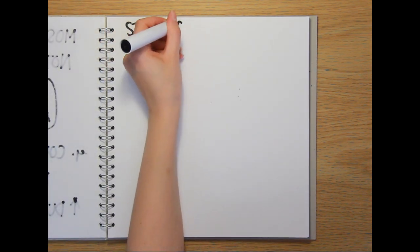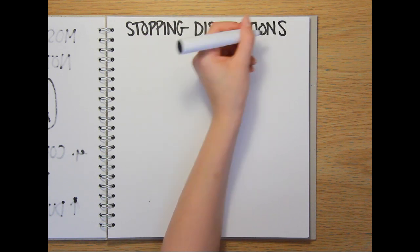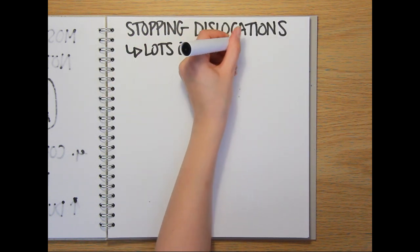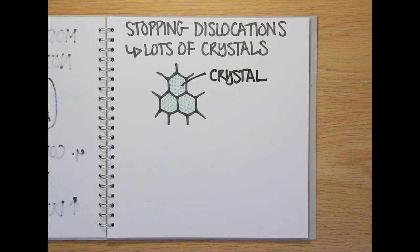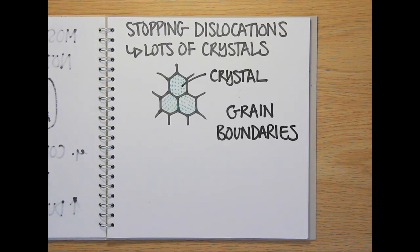Another way to stop dislocations from spreading through an alloy is to make sure it's made up of as many tiny crystals as possible by cooling them quickly once they've been cast. The joins between the crystals, which are known as grain boundaries,